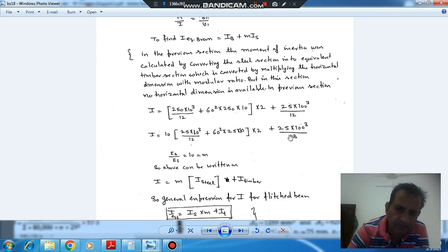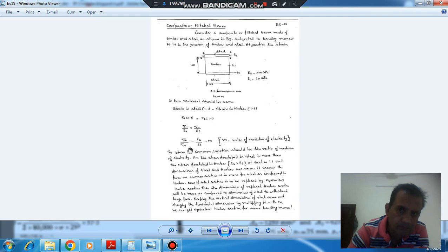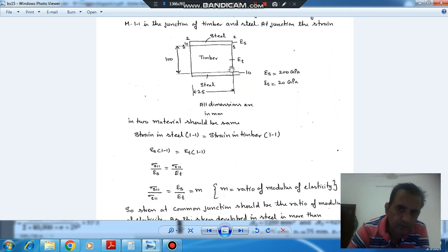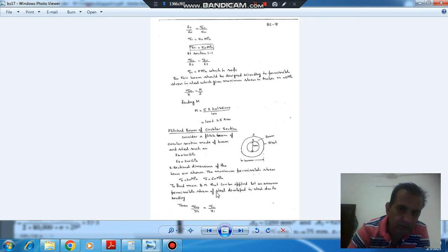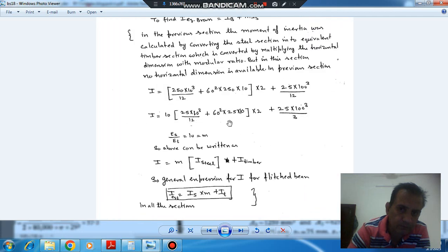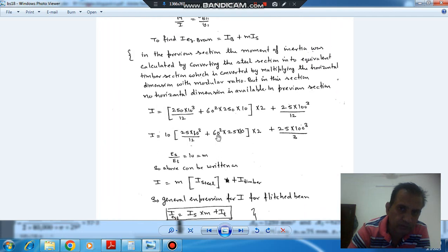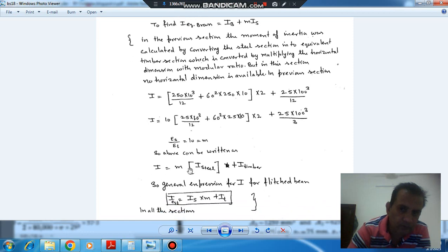And this part is same. So if we take this section, then the moment of inertia of this section is, if we are not converting the material, in finding moment of inertia of this section, or of the steel section, then moment of inertia will be, for this section will be this. So this is your moment of inertia of the steel, and this is your m, and this is your timber.